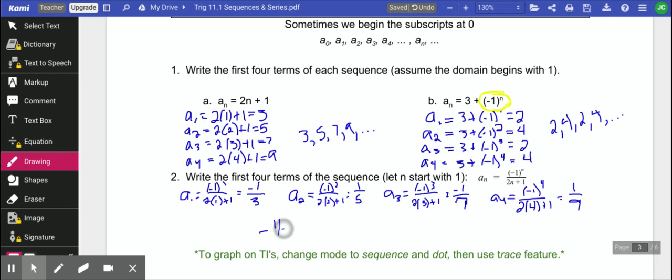So our sequence is negative 1 3rd, 1 5th, negative 1 7th, and 1 9th. And again, like I said in the last problem, notice that we have that bouncing back and forth between a negative and a positive that's being caused by that negative 1 to the n. So when you see things kind of oscillating like that, usually there's a negative 1 to the n in the problem.